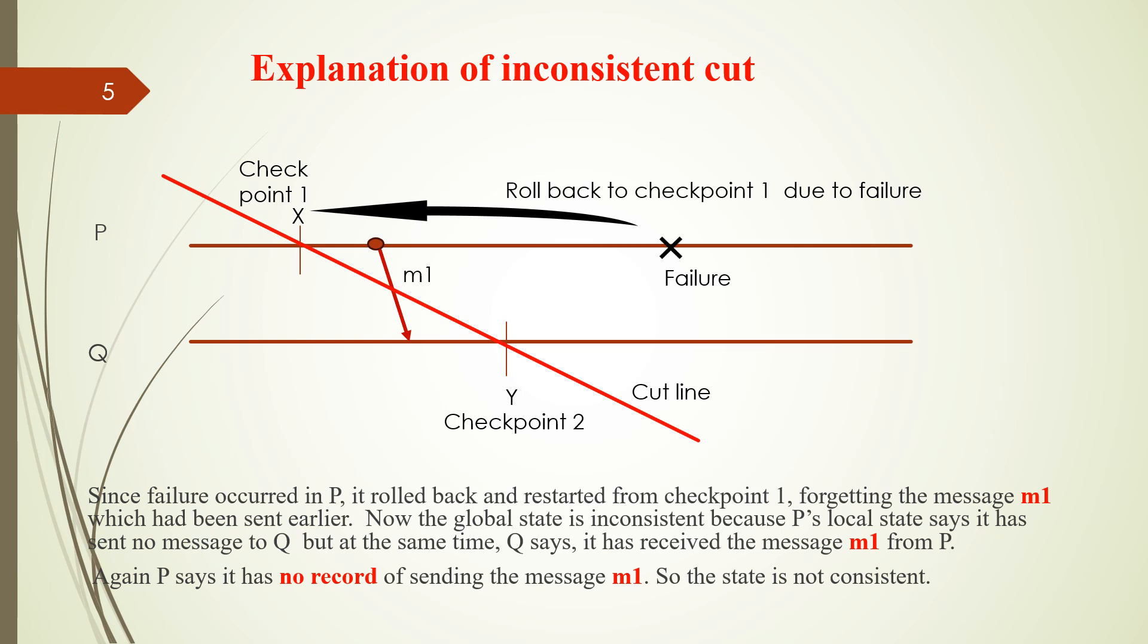So explanation. There are two processes, P and Q. Failure occurs at P. So P has to roll back to the latest checkpoint 1. And since it rolled back to the latest checkpoint, it has forgotten everything. That is, it already sent the message M1 to Q. Since it rolled back, it has forgotten that it has sent a message M1 to Q.